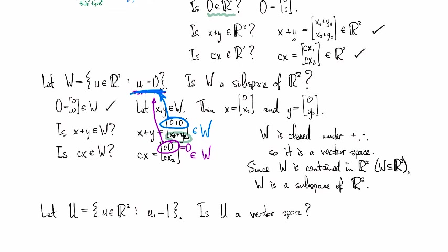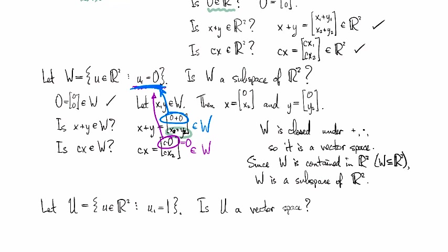And so is u a vector space? Well, the first thing we do is we check to see is 0 and u. And so the question is, if we look at 0, is this first coordinate here a 1? And the answer is no. So since it fails right there,